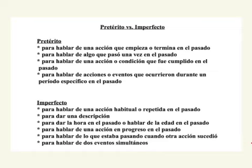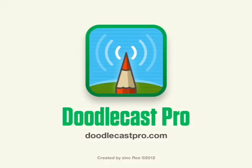So, in the story, the imperfect provides the background information, whereas the preterite tells what happened. Those are los usos del pretérito y los usos del imperfecto.